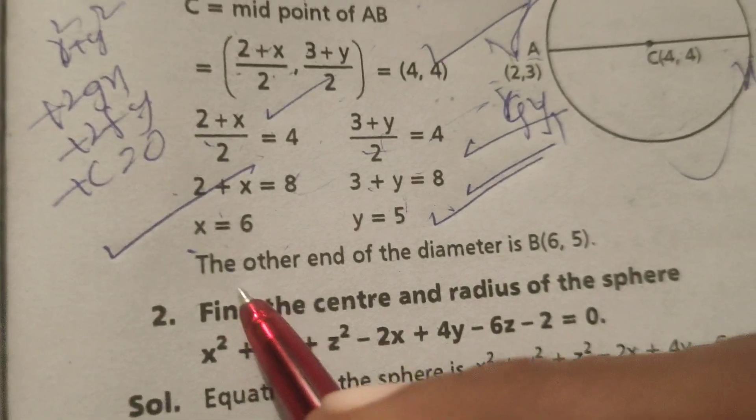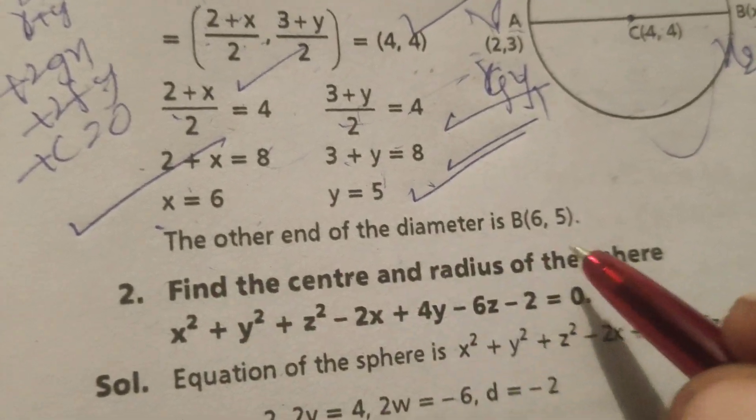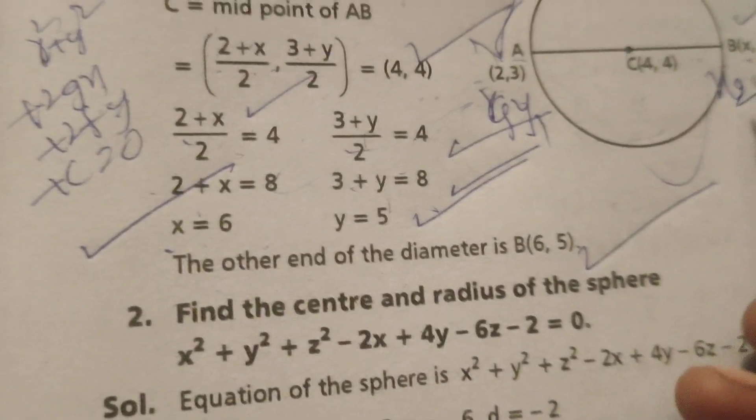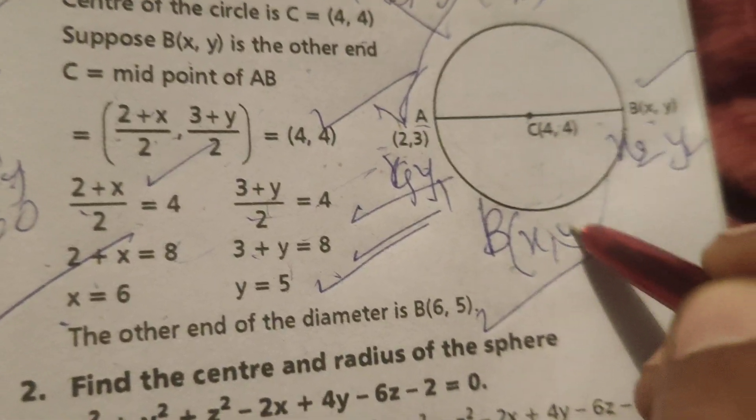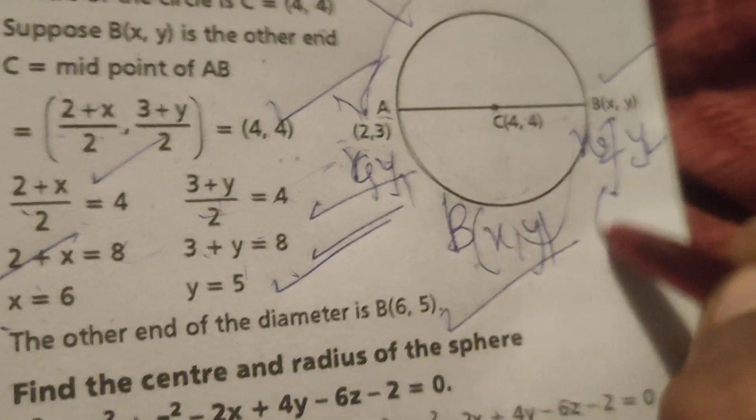Therefore, the other end of the diameter is (6, 5). That is, B(x, y) = (6, 5).